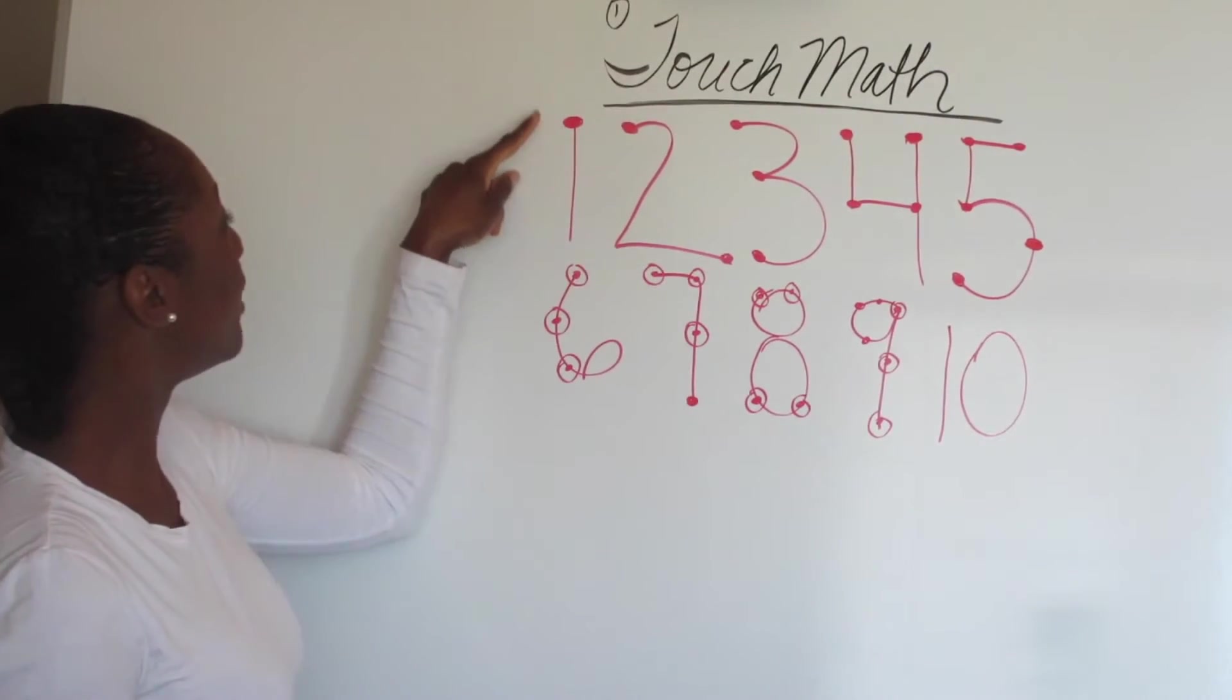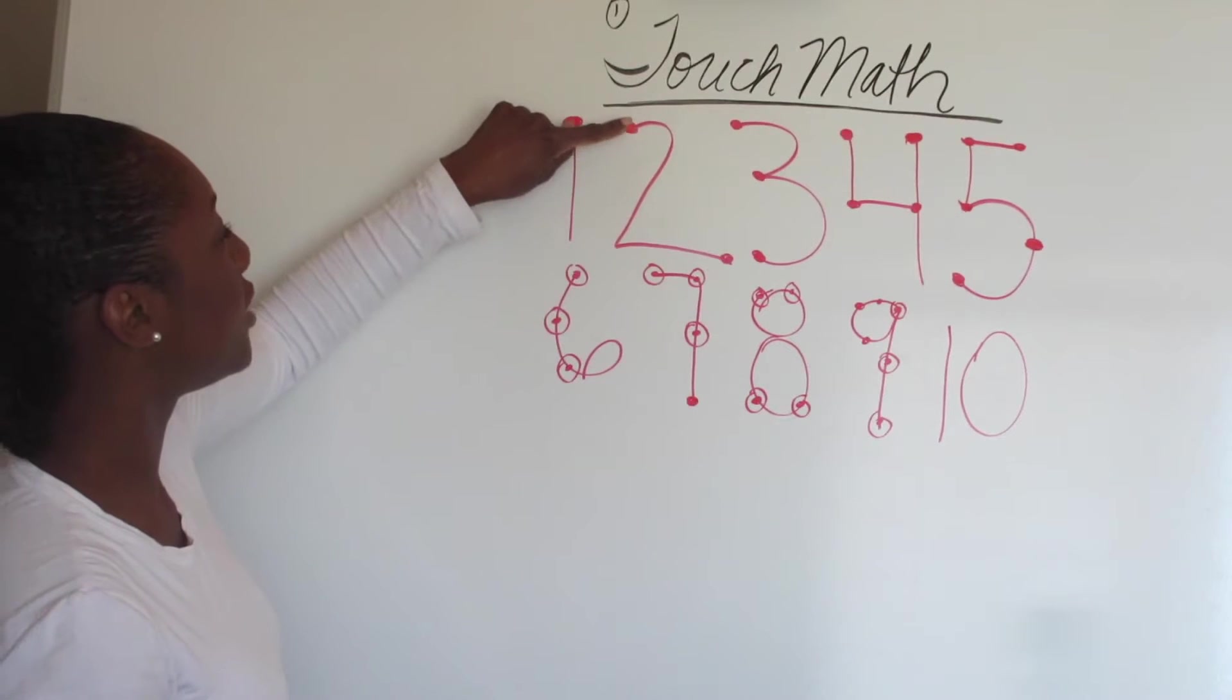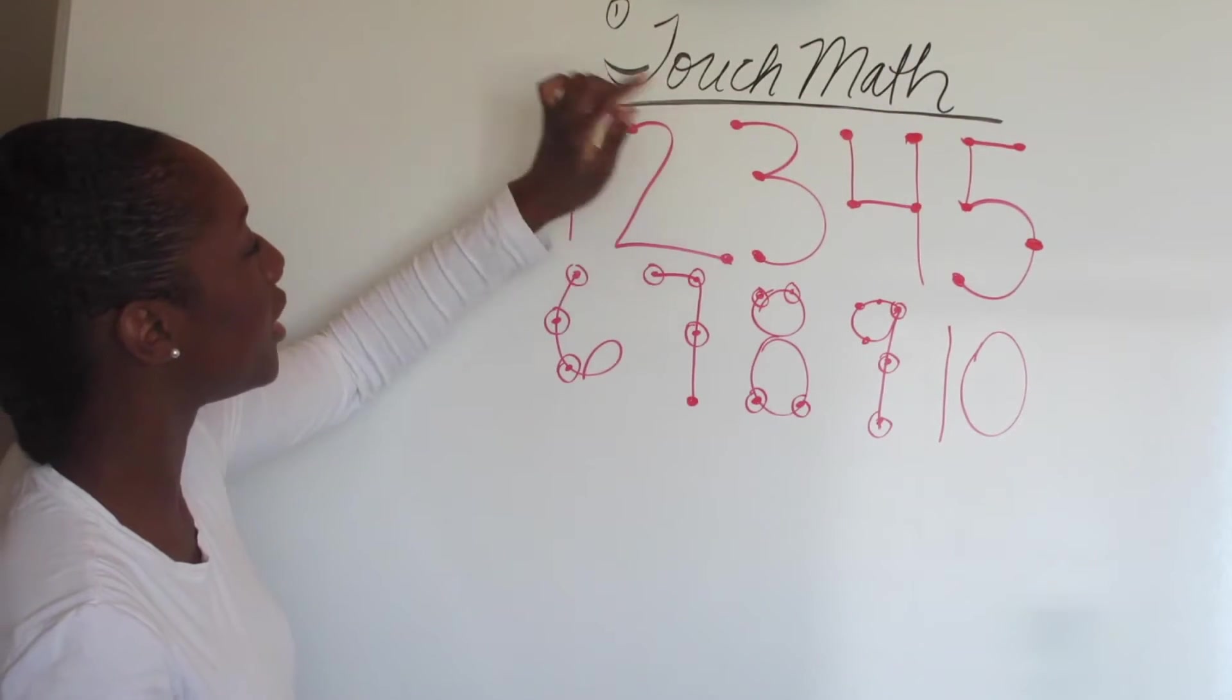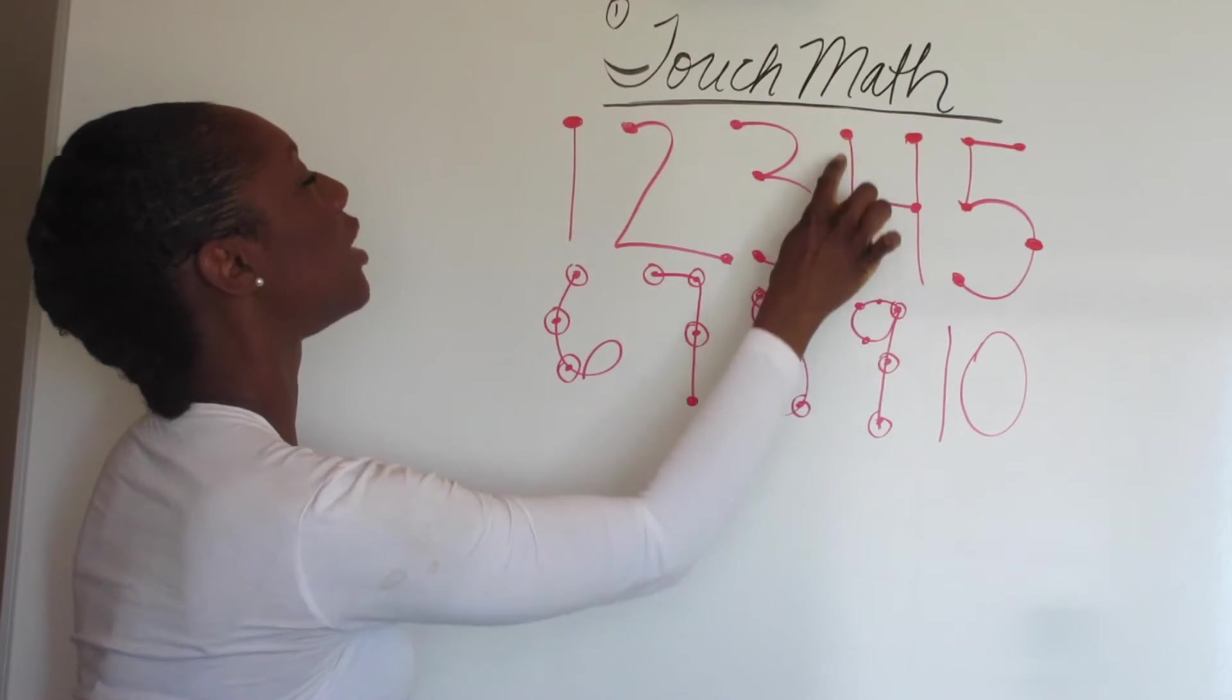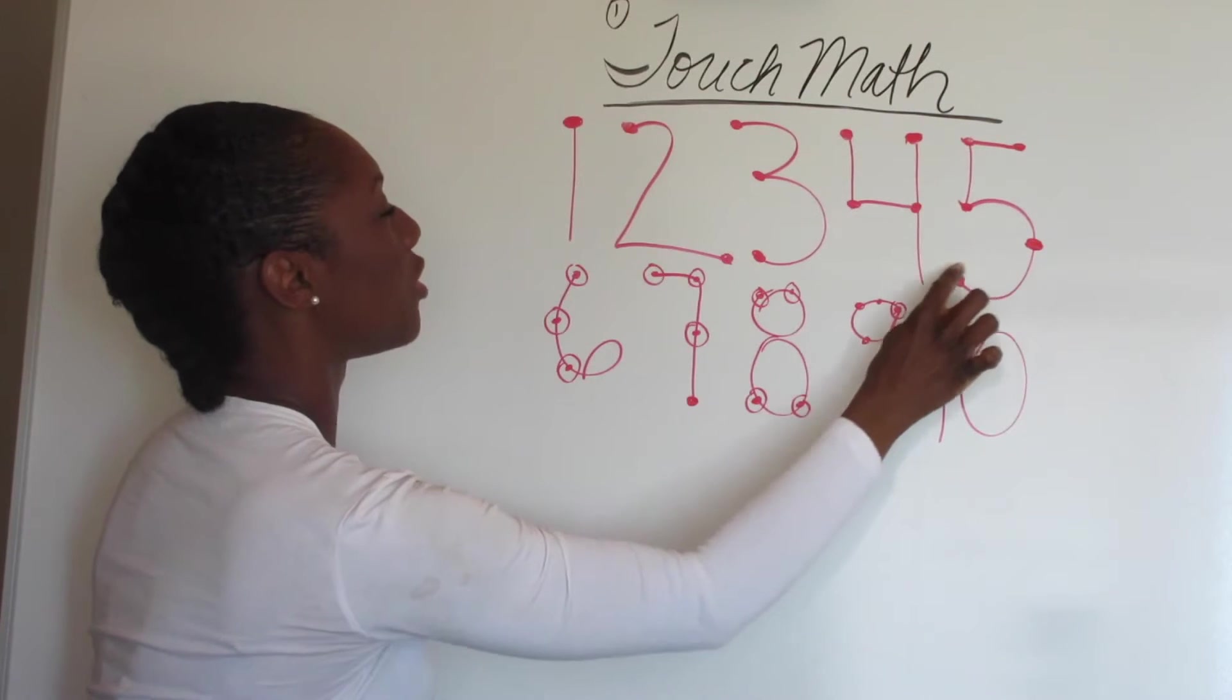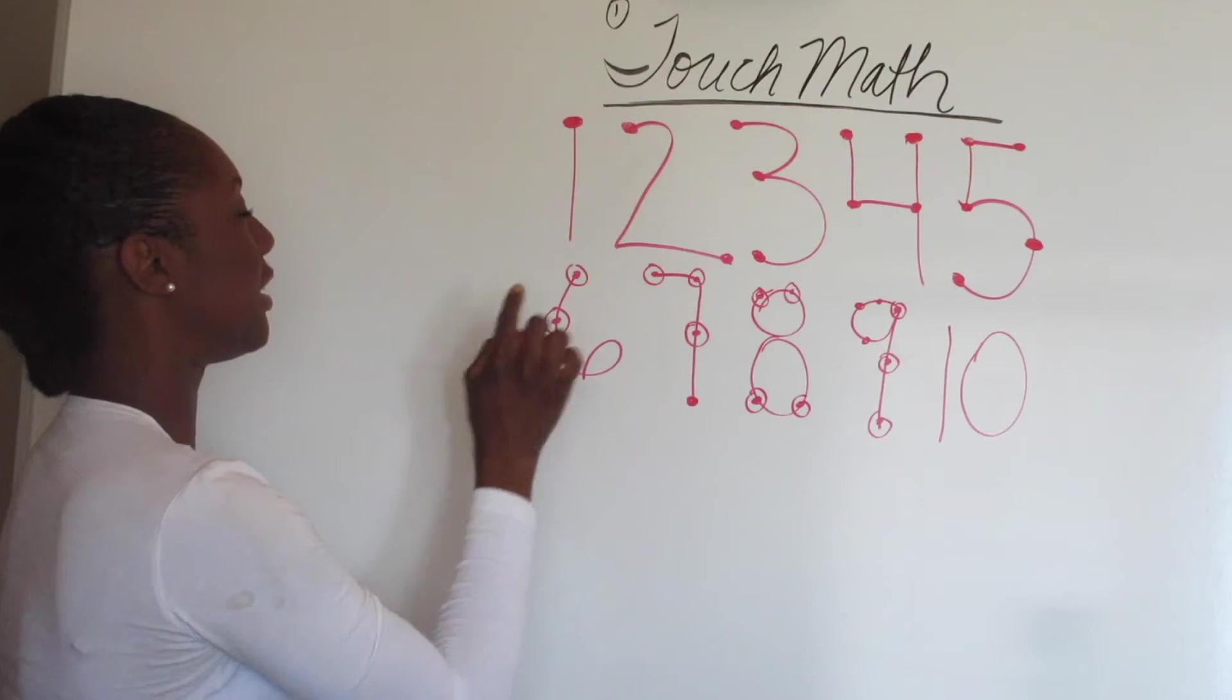For one, there's one dot. Two has two dots, one, two. Three has three dots, one, two, three. Four has four dots, one, two, three, four. Five has five dots, one, two, three, four, five. Six has six dots.